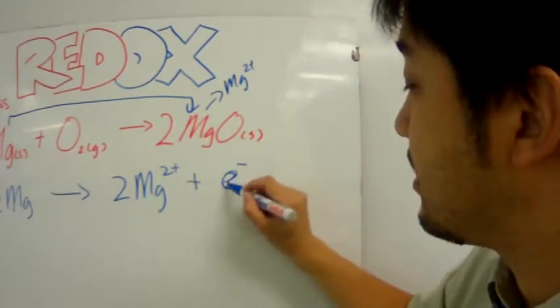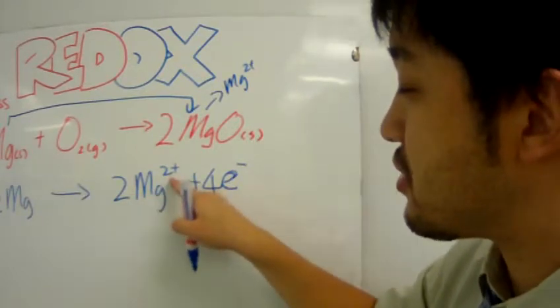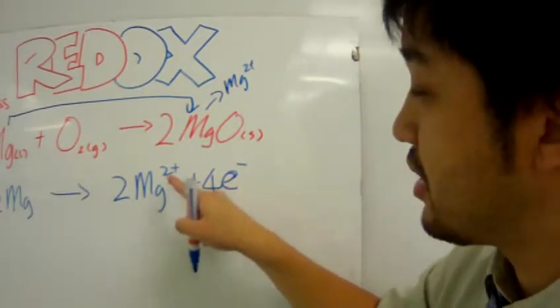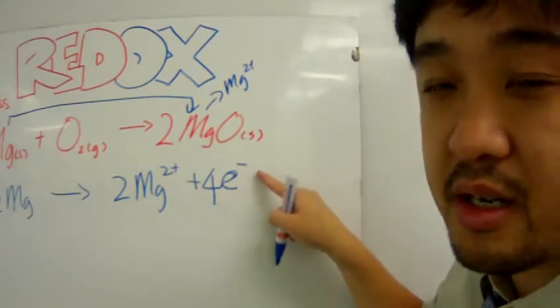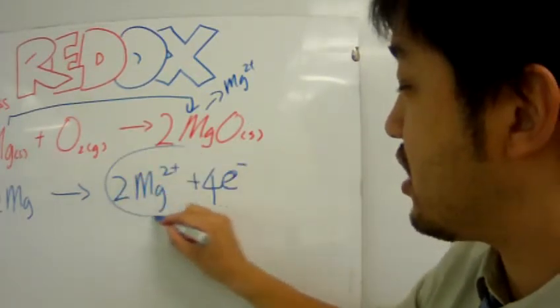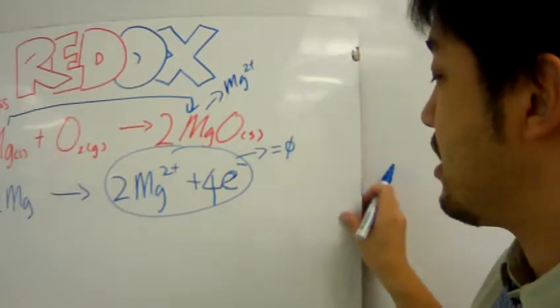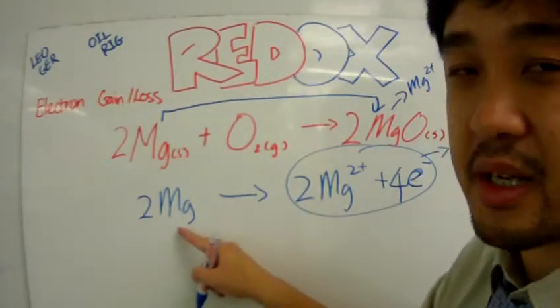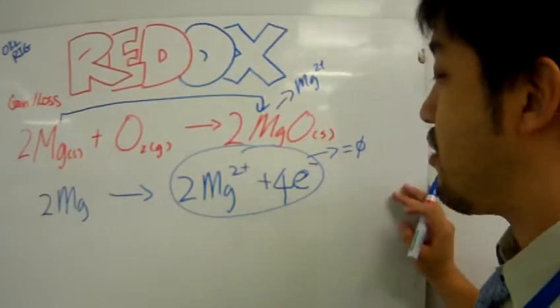Oh, sorry. This must be a four minus. So, two times positive two is a four, and four times negative one is a minus four. So, the charge, the total charge over here will also equal zero.